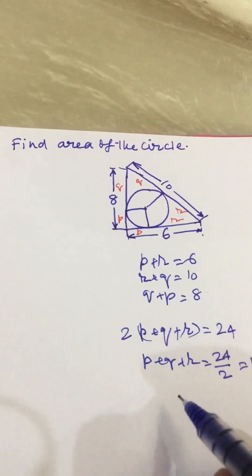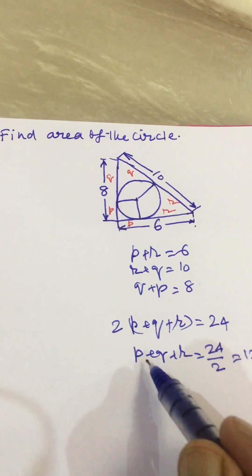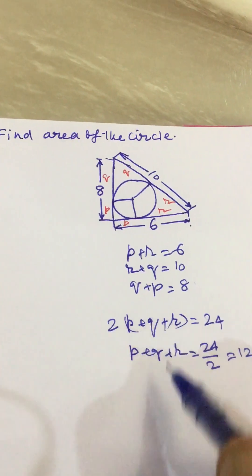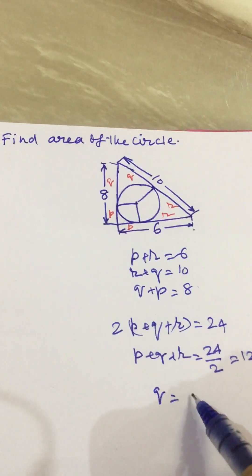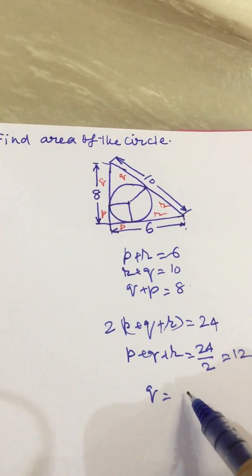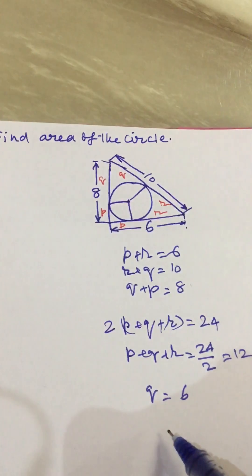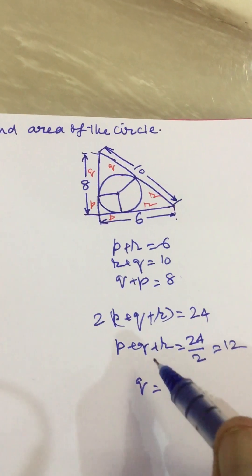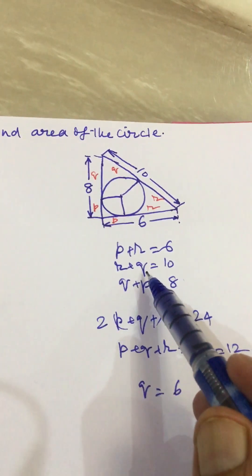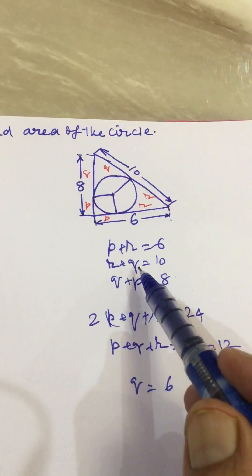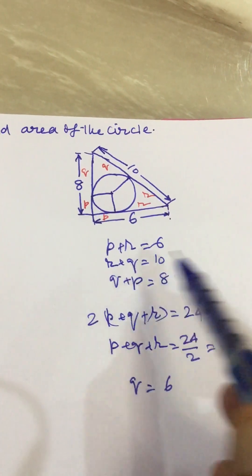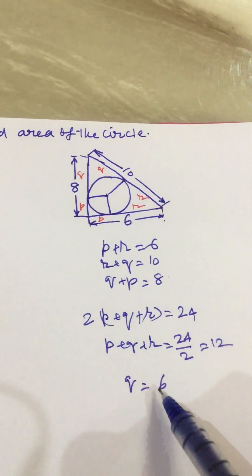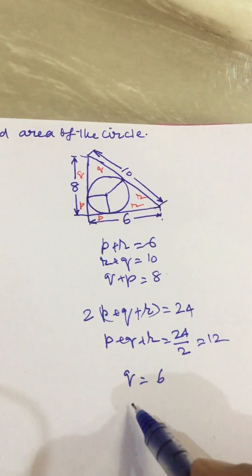Then we get P plus R will cancel. We have Q equal to 6. Then we put this value of Q in this equation.